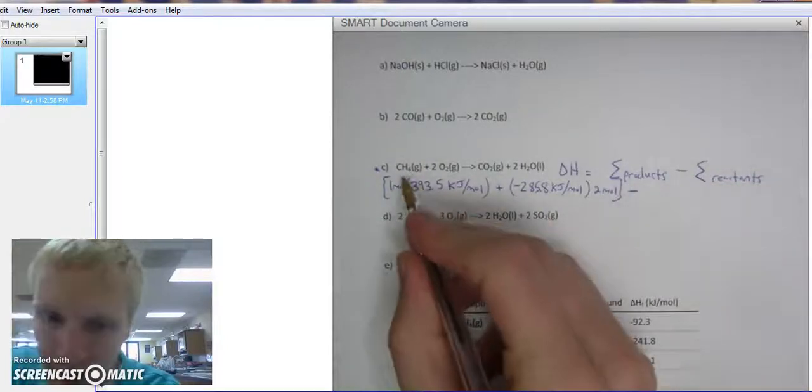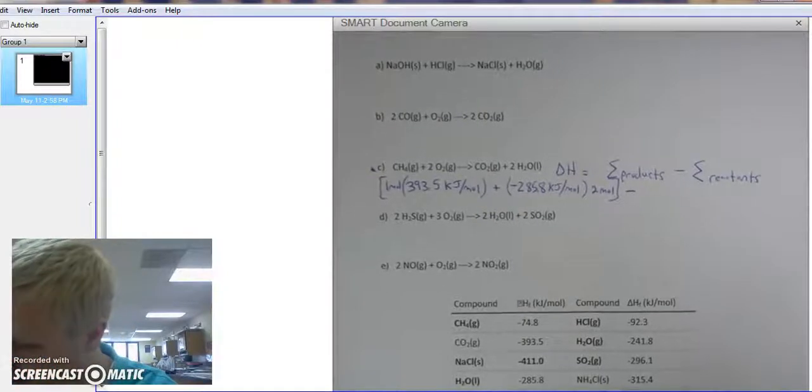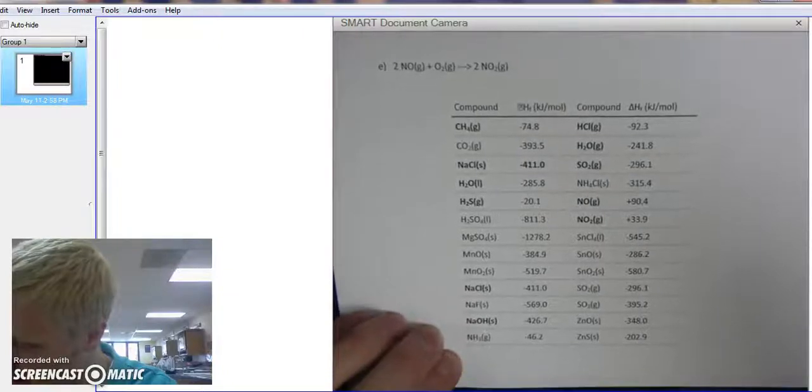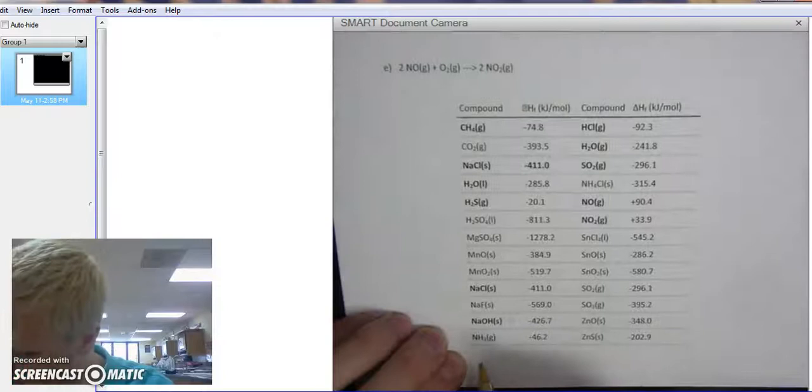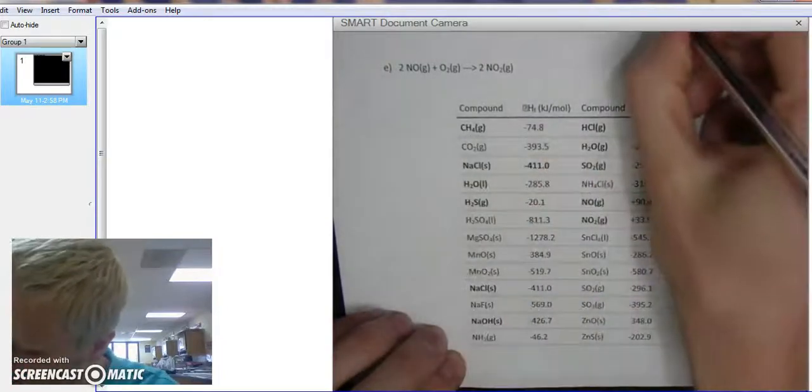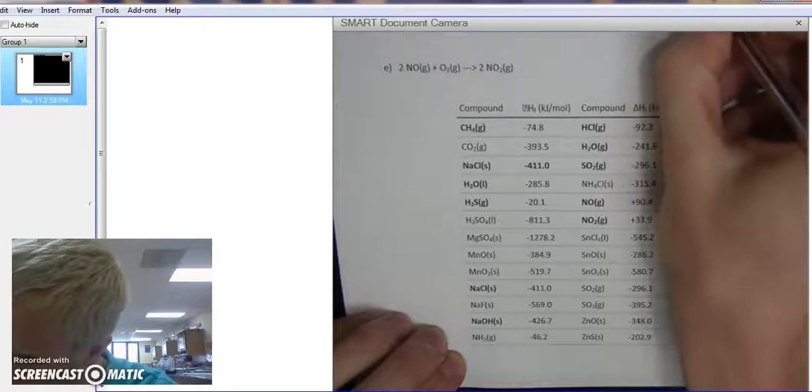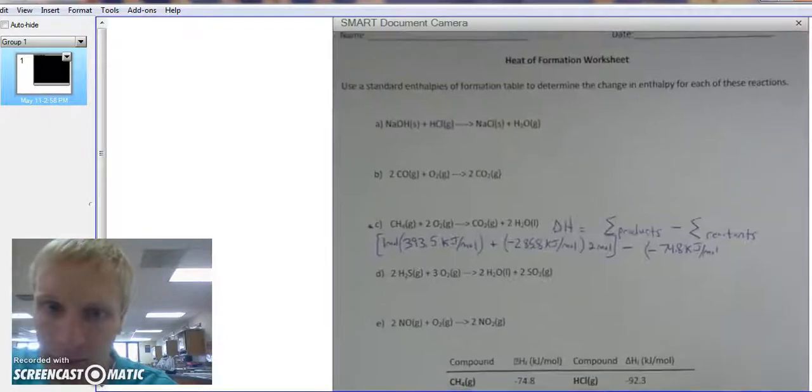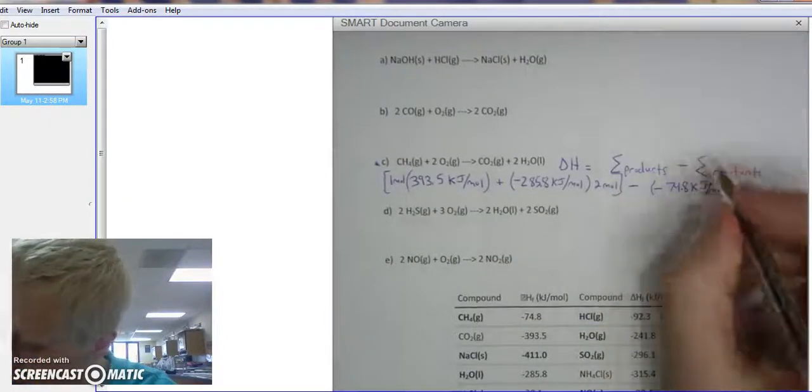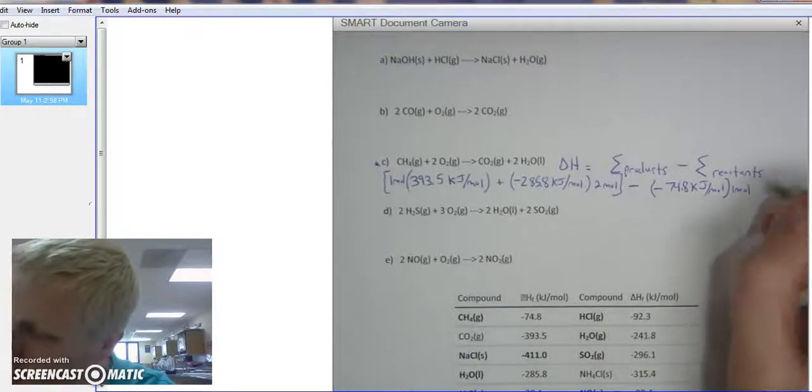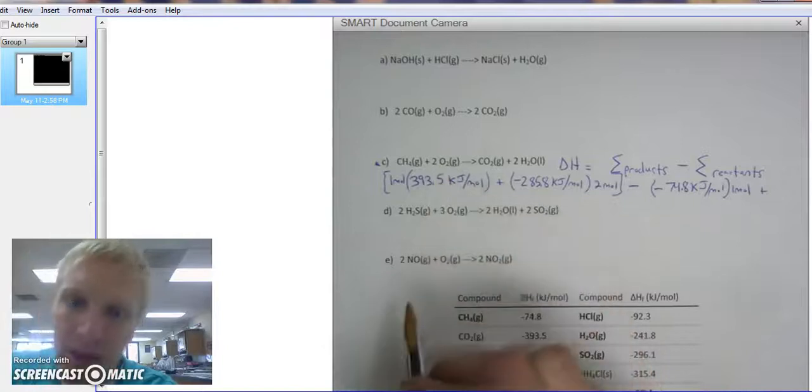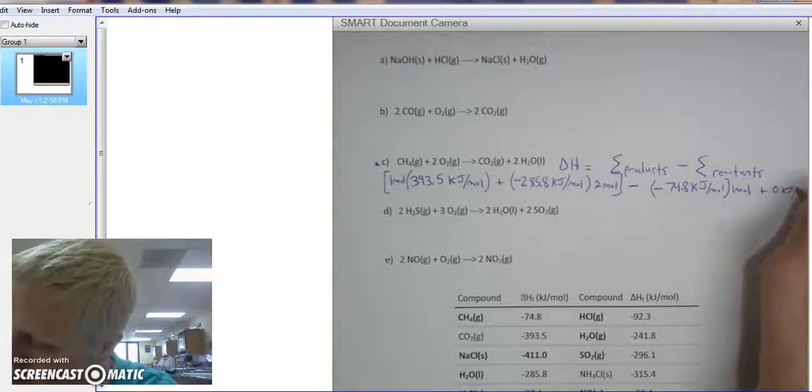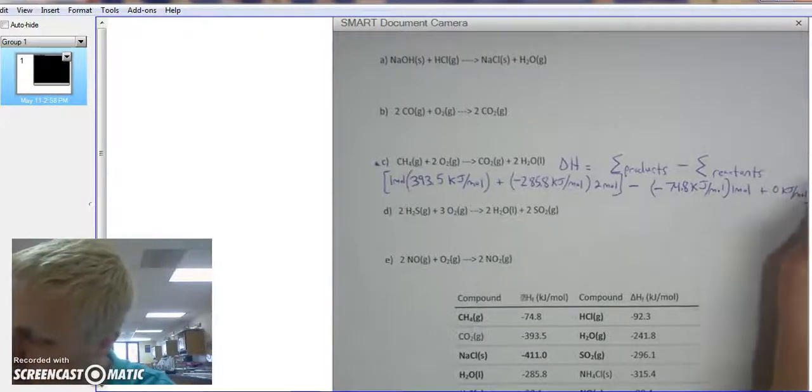And we want to subtract our CH4, methane. Scrolling down, I'm looking for it... Oh, there it is. Negative 74.8 kilojoules per mole. There's just one of them, one methane, so we times it by one mole. Plus O2—any time we have a diatomic element, it's going to be 0 kJ per mole. Put that in brackets.